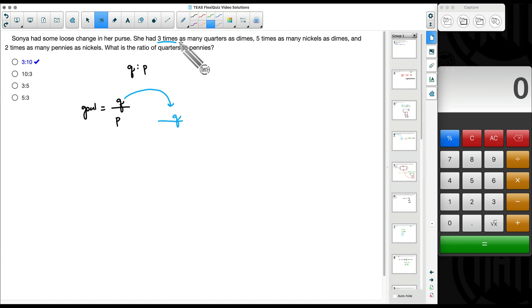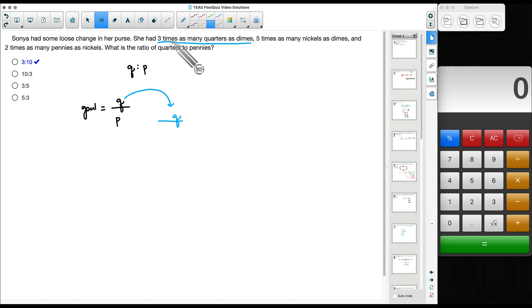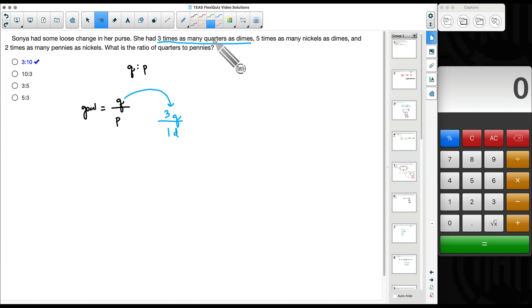She had three times as many quarters as dimes. Here's what this really means. For every three quarters she has, there's going to be one dime. That's what three times as many quarters as dimes represents. For every three quarters, she has one dime.